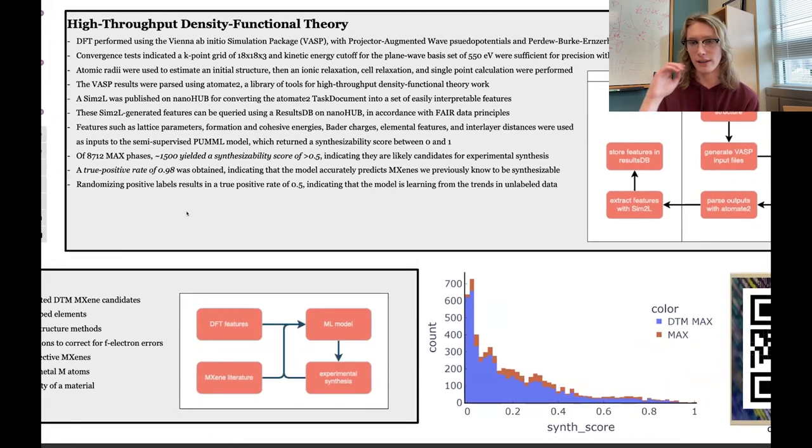For generating features for this machine learning algorithm, we used high-throughput density functional theory. This is where a lot of the open science comes in. We did our calculations with VASP, which itself is not open source, but we parsed the results with an open source Python library called Atomate2.